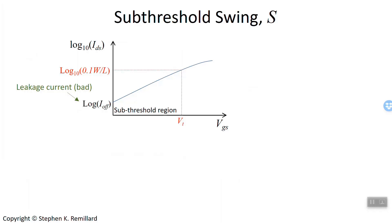With this expression now for the sub-threshold current shown in this graph, we can come up with a parameter that allows us to optimize the on-current and the off-current simultaneously, the subthreshold swing.